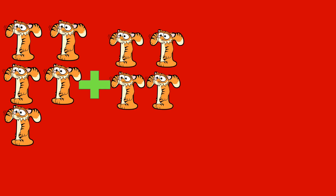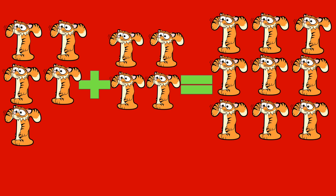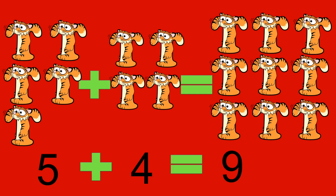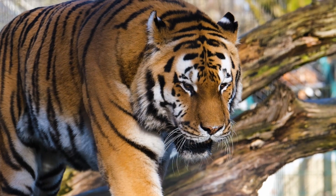Five tigers plus four tigers equals nine tigers. Five plus four equals nine. Tiger.